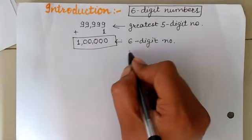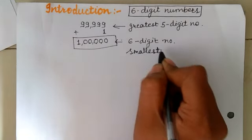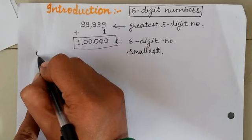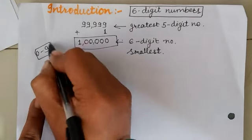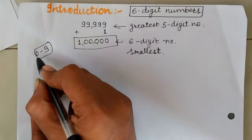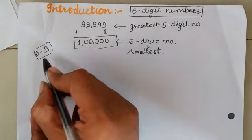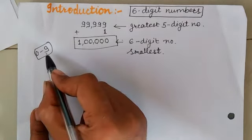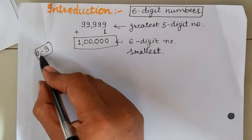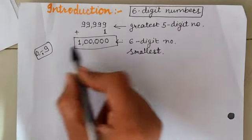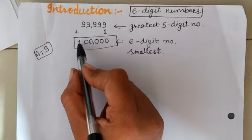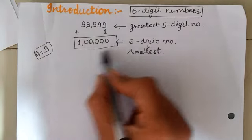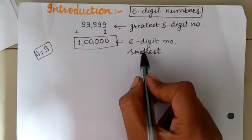This is the 6-digit number. We can also call it the smallest 6-digit number. How is that possible? From the digits 0 to 9, 0 is the smallest number, but if we put 0 in the starting position it has no value. That's why we put 1 next to 0. So 1 is at the start, and then all zeros — that 6-digit number becomes the smallest 6-digit number.